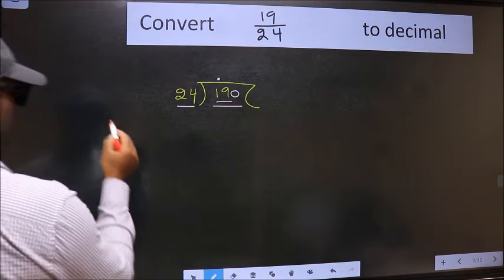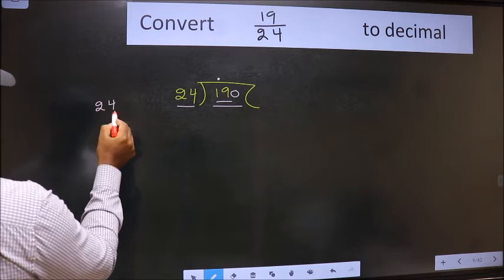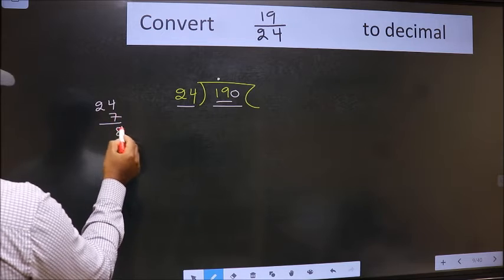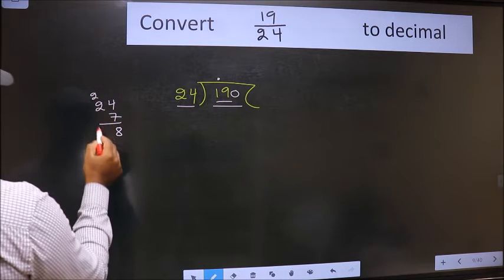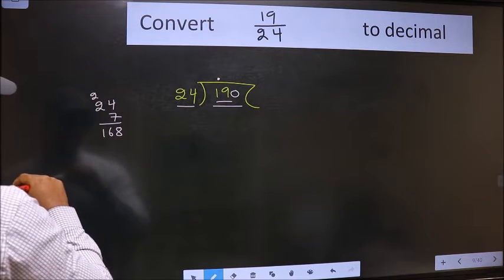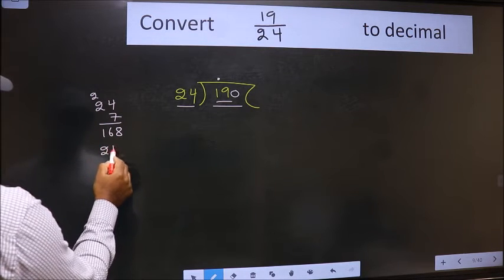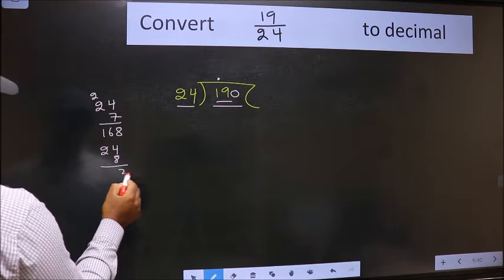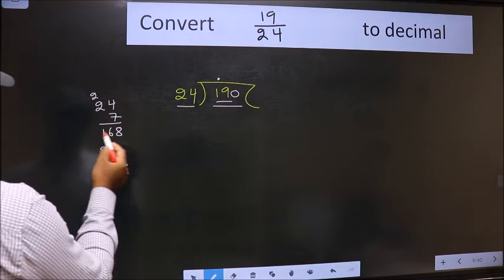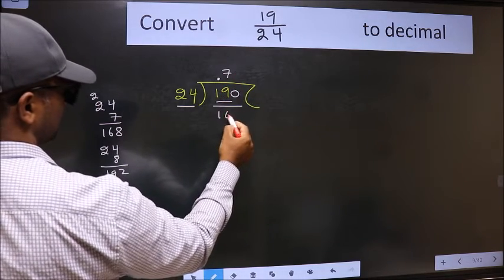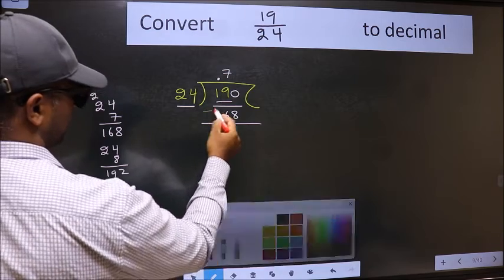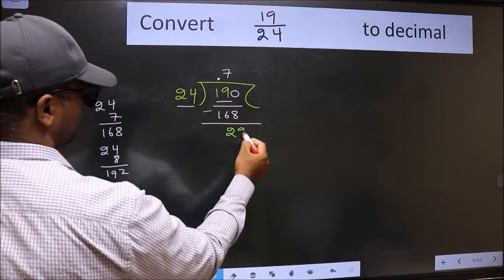7 times 4 is 28, 8, 2, 7, 2, 14, 16, 168. So check with 8: 2 times 192 exceeds, so take 7s, 168. Now we should subtract. We get 22.